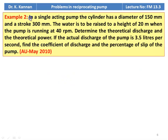Example number 2: In a single acting pump, the cylinder has a diameter of 150 mm and stroke 300 mm. The water is to be raised to a height of 20 meter when the pump is running at 40 RPM. Determine theoretical discharge and theoretical power. If the actual discharge is 3.5 liters per second, find the coefficient of discharge and percentage of slip. This is from May 2010 question paper.